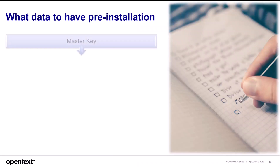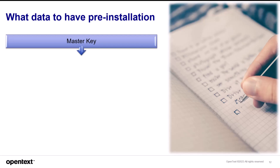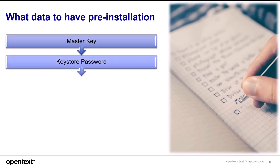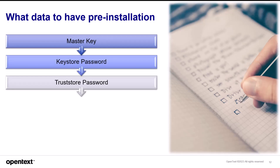What data should you have prior to installation of UCMDB? You must have a master key. A master key must contain exactly 32 characters and must include one of each of the following four types of characters: uppercase alphabetic, lowercase alphabetic, numeric, and special characters such as colon, slash, period, underscore, plus, minus, left square bracket, and right square bracket. You will also need a key store password — you will only be prompted for this if your previous installation uses default passwords or if it's a new installation. The trust store password will also be required. Once supplied, the key store and trust store passwords are stored in a newly generated file called serverstorepass.conf.